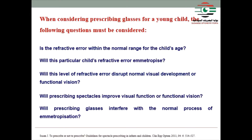When considering prescribing glasses for children, several key questions must be asked: Is the refractive error within the normal range? Will this child's refractive error disrupt normal visual development or functional vision? Will prescribing spectacles improve visual function, and will prescribing glasses interfere with the normal process of emmetropization? These questions were suggested by Susan, 2011–2012.